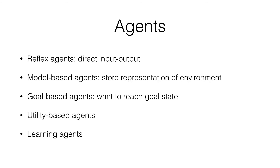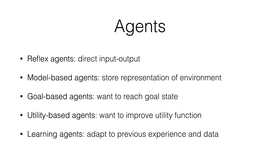But goals are often not enough — we also need some notion of how close you are to the goal. So the next type is the utility-based agent, which has a utility function, a score function, that looks at the current state of the world and decides how much reward the agent should get. If you reach a goal state, you get a lot of reward; if you're close, you get a good amount; if you're far away, very little. This produces a landscape of utility that helps the AI find the path toward the goal. The last type is the learning agent, which is able to adapt to previous experience and other data — perhaps by adapting its utility function, improving its model, or changing its goal — during its life cycle.